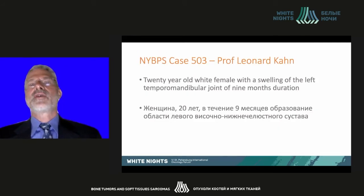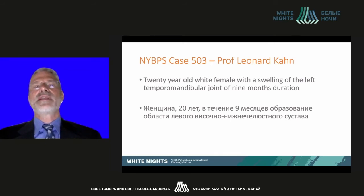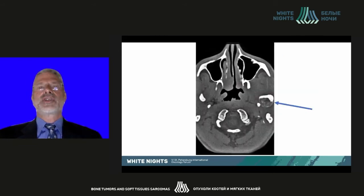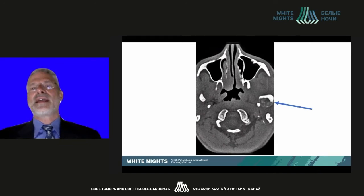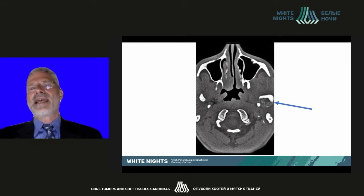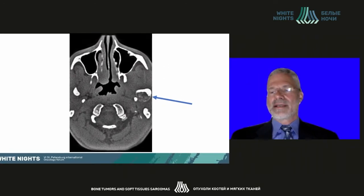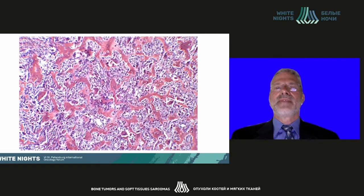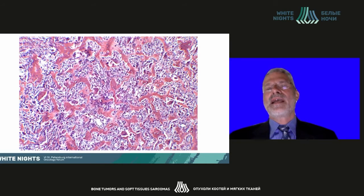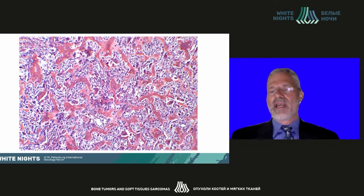The first case is courtesy of Professor Leonard Kahn. It's a 20-year-old white female with swelling of the left temporomandibular joint of nine months duration. On the left, there is a lesion destroying the neck of the mandible, with an expansile lesion that has radio-dense bony elements within it, high attenuation seen on CT. On pathology, we see classic mature bone formation with extensive osteoblast formation without any evidence of malignancy. This is classic pathology for an osteoblastoma.